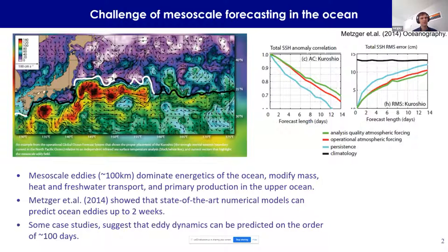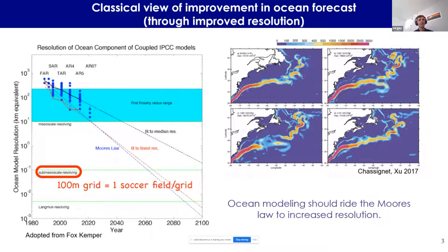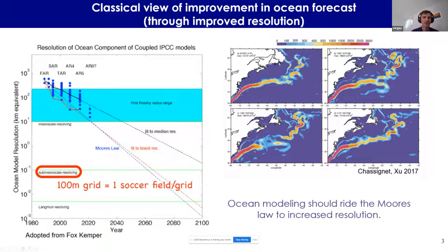There is no systematic study of ocean mesoscale predictability like we saw from Judith Falco earlier today, so we don't have a more theoretical upper limit like we have for mid-latitude weather. The classical view of how to get better ocean forecasts is to essentially ride Moore's law. Naval models were always about an order of magnitude better resolved than IPCC models, and have been resolving mesoscale for about two decades now.